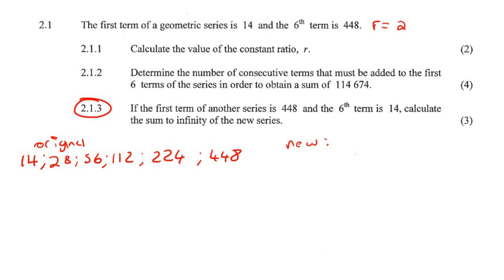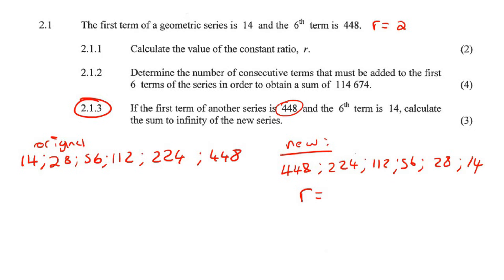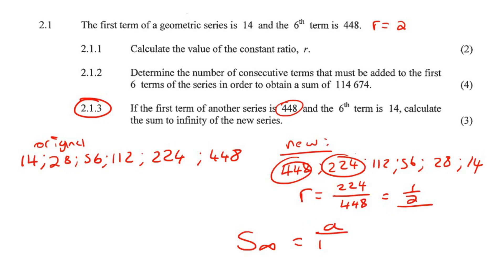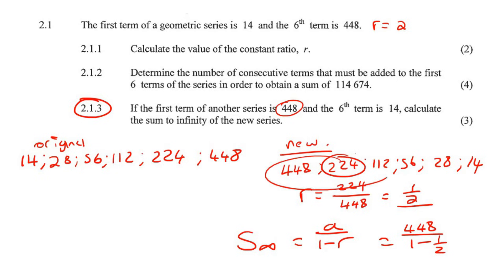This new series has a first term of 448 and r = 1/2, because the numbers are getting smaller — you're multiplying by a half each time. So we use the sum to infinity formula with a = 448 and r = 1/2. Working that out, you get 896 as your final answer.